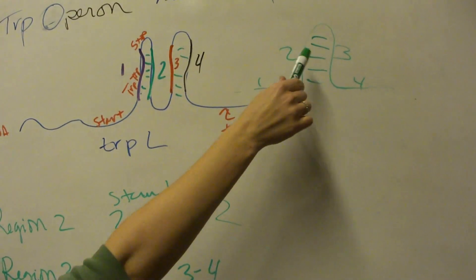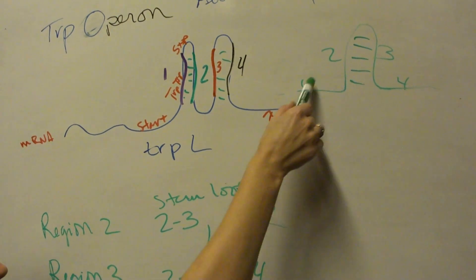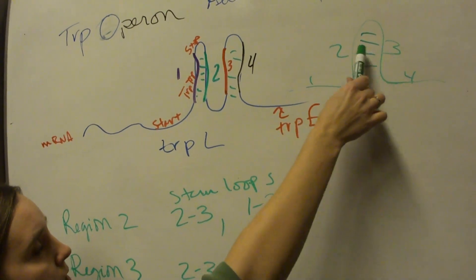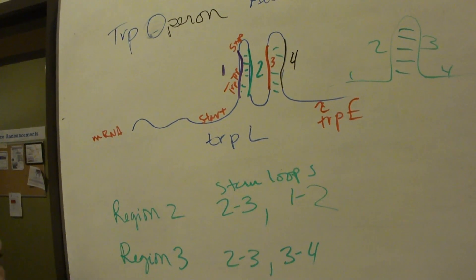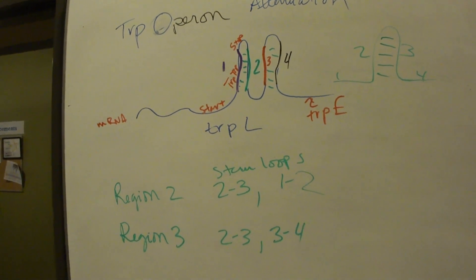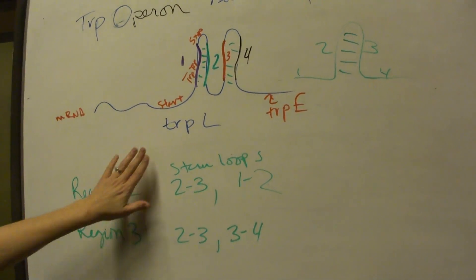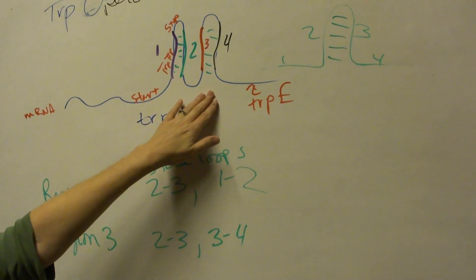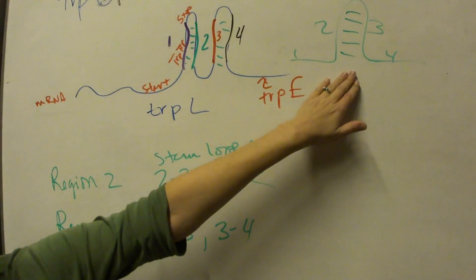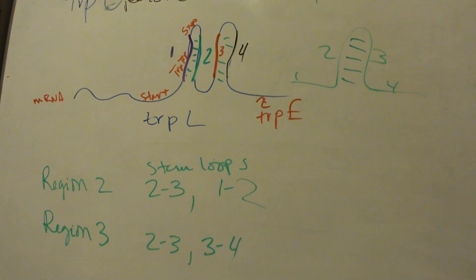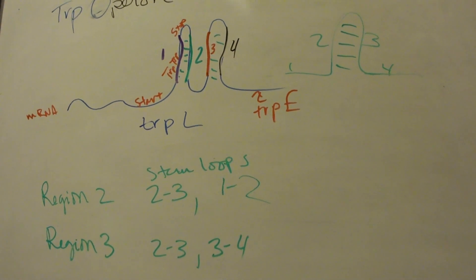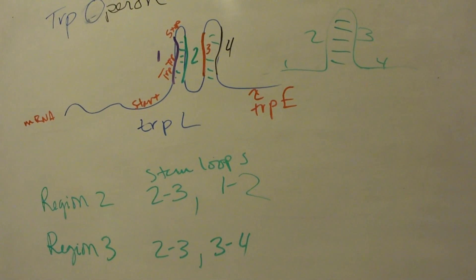Region 1 and 2 is kind of flat in here, so it's not forming a stem loop in that case, you just have 2-3. Right, because 2 is busy binding with 3, it can't bind with 1, and because 3 is binding with 2, it can't bind with 4. So it's an either-or deal. You only can see two different situations: the 1-2-3-4 stem loop or the 2-3 stem loop.